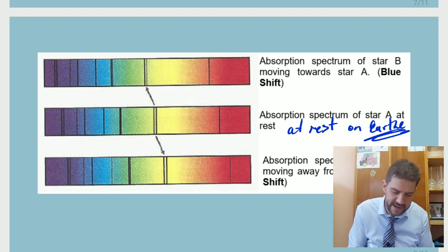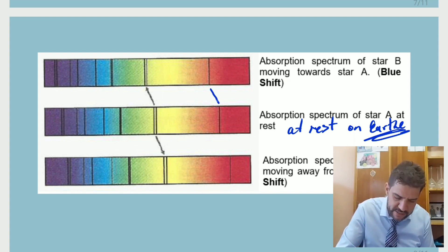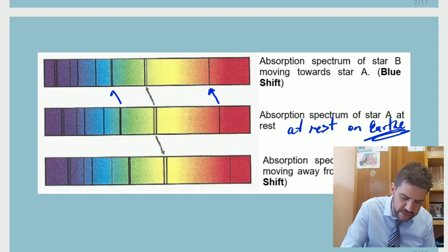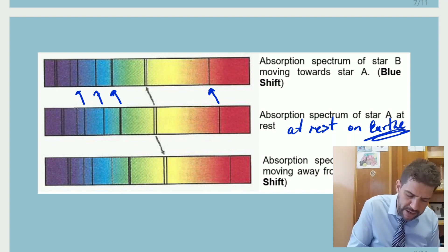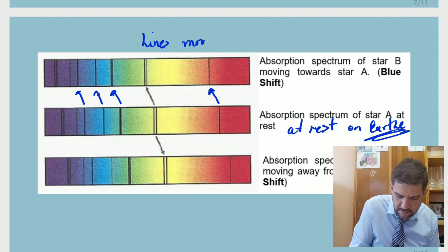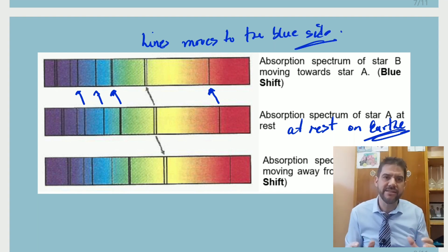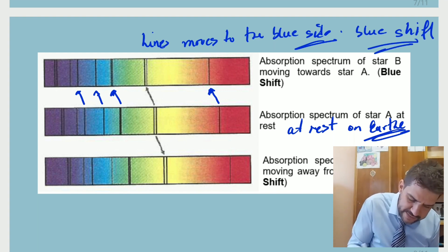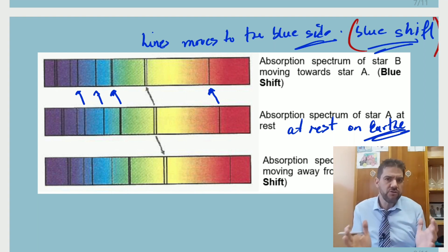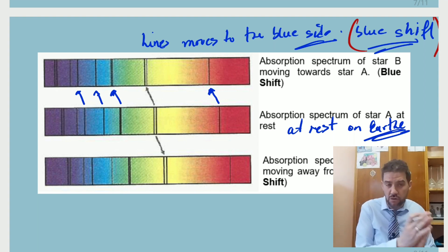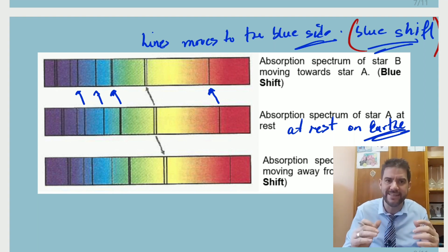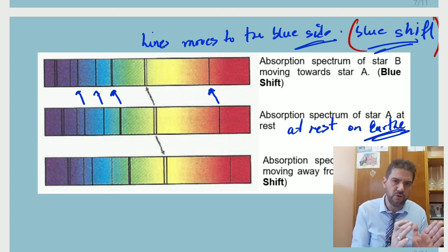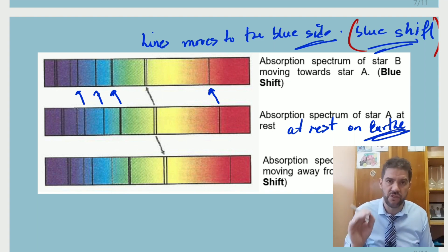For instance, in one case all the lines shift to the left, which corresponds to the blue side. All the lines move to the blue side — that is what we call blue shift. It's called blue shift because the lines move to the blue side. If the absorption lines move to the blue compared to the reference on Earth, always make sure you identify which one is the rest spectrum.